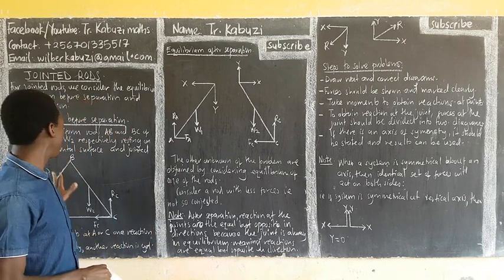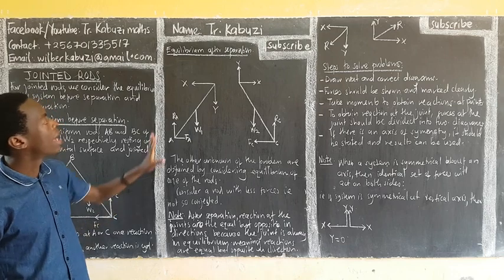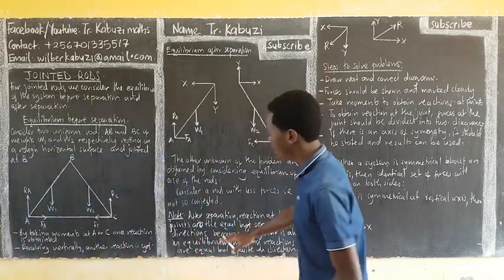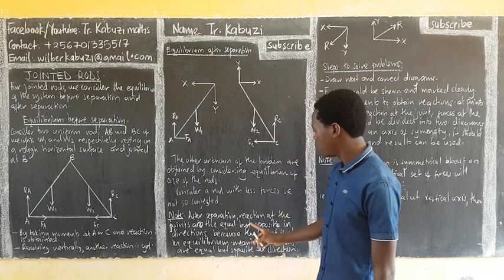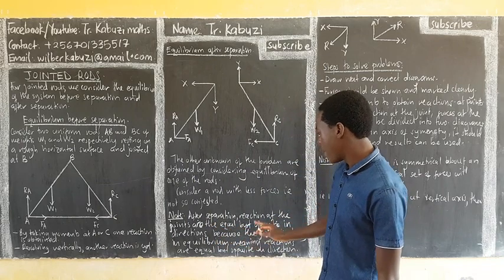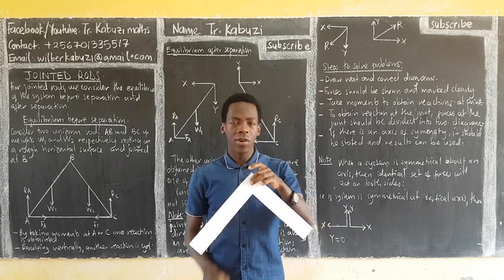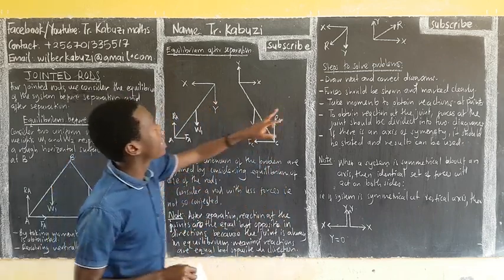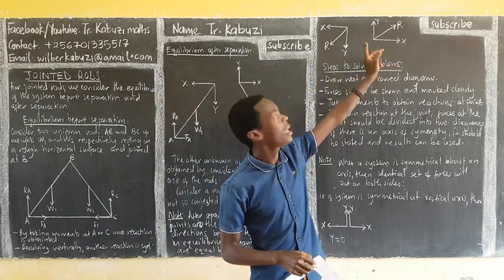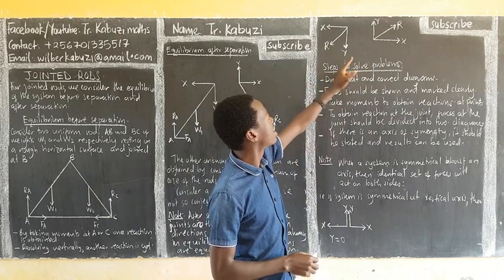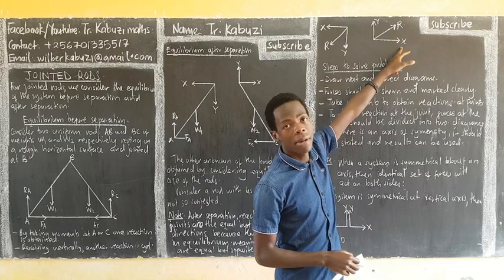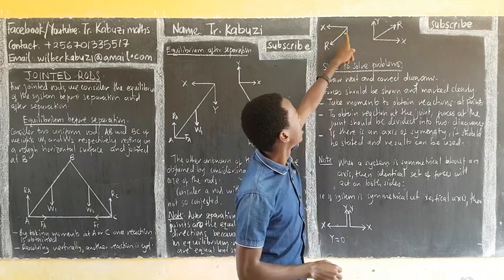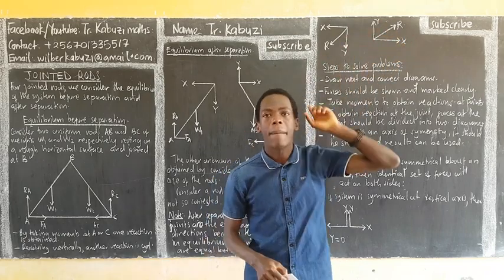Now, equilibrium after separation. After separating, reactions at the joint points are equal but opposite in direction. This is because at a pin joint there is no external force acting. It means that after separating, the reactions are equal but opposite in direction — one going downward, the other going upward. As a result, we get the x-component and the y-component for each rod, but they are opposite: one y goes up, the other goes down; one x goes this side, the other goes the other side. They are equal but opposite in direction.